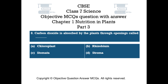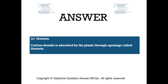Question number 8. Carbon dioxide is absorbed by the plants through openings called. Option A: Chloroplast. Option B: Rhizobium. Option C: Stomata. Option D: Stroma. The right answer is option C: Stomata. Carbon dioxide is absorbed by the plants through openings called stomata.